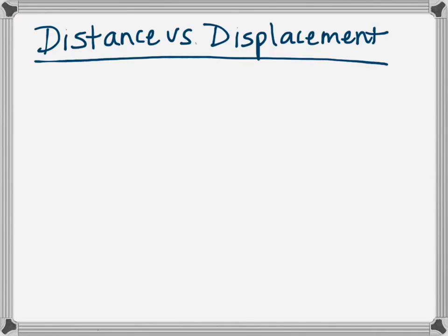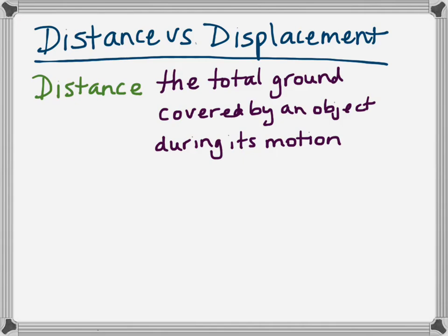In this video, we're going to look at the difference between distance and displacement. First, let's look at the definitions of the two terms. Distance is the total ground covered by an object during its motion. For example, if I walk around the school campus and I've walked 700 meters, then that's my distance.